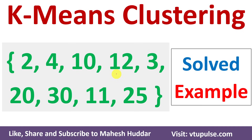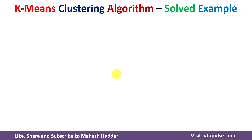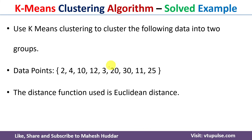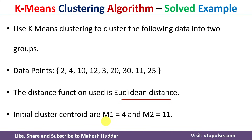Welcome back. In this video I will discuss how to apply the k-means clustering algorithm on a given dataset so that we can divide data into different clusters. We have nine one-dimensional data points. We will use Euclidean distance to calculate the distance between data points and centroids. The initial centroids are given: m1 = 4 and m2 = 11. We need to divide these data points into two clusters.